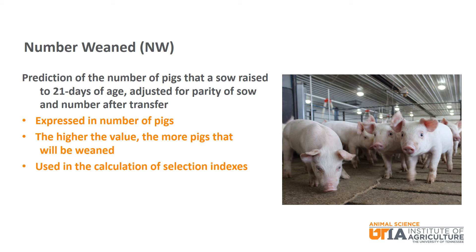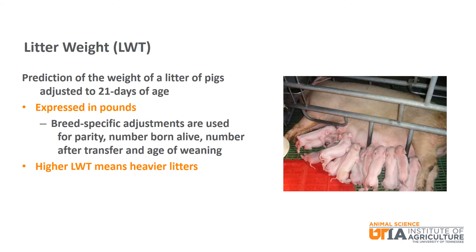Number Weaned is used in the calculation of selection indexes. Litter weight or LWT is the next EPD and it is expressed in pounds. It is the prediction of the litter weight of pigs adjusted to 21 days of age. There are breed specific adjustments for parity, number born alive, number after transfer, and age of weaning. A higher litter weight EPD means heavier litters of pigs.